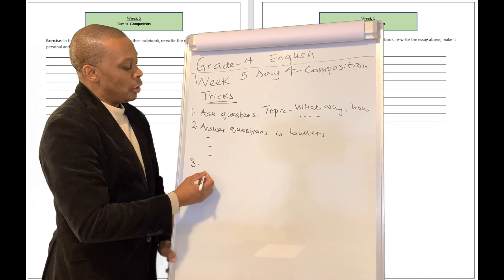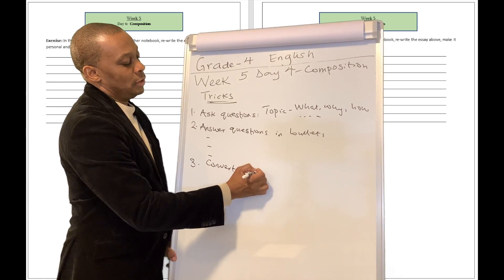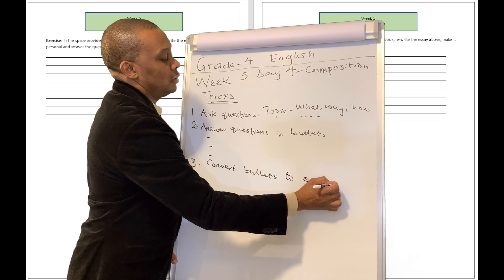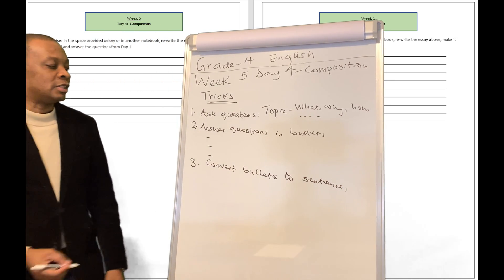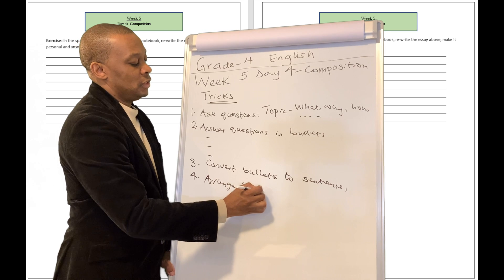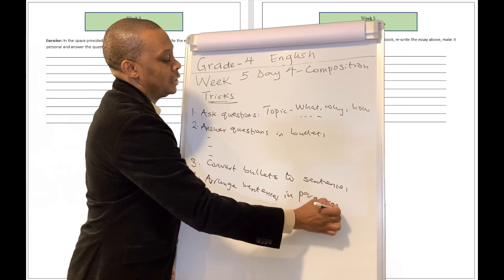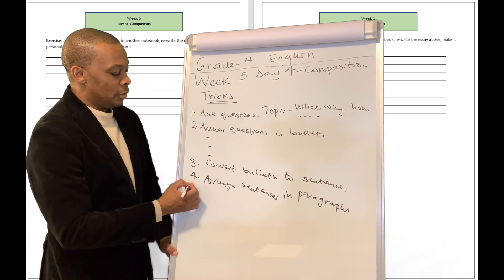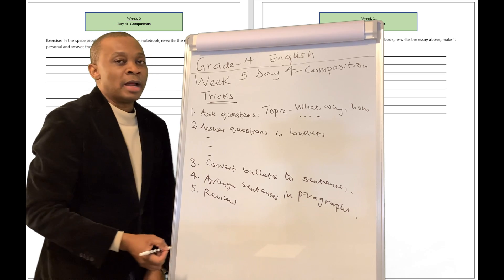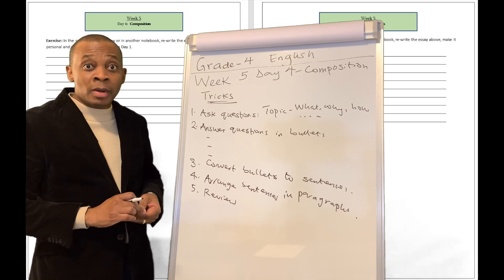Number three, you are going to convert your bullet points — bullets to sentences. Then you are going to arrange your sentences into paragraphs. Then you are going to review. And when you walk through this process, you're going to find out: wow, this is actually really easy to write something. It's really easy.